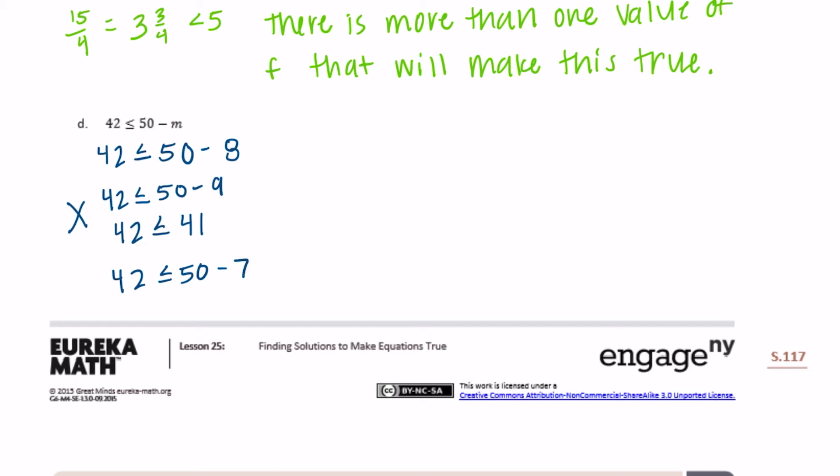So let's try 42 is less than or equal to 50 minus. Let's choose something smaller than 8. 7. So is 42 less than or equal to 50 minus 7 is 43. So that is true. So M will be true if it is less than or equal to 8.